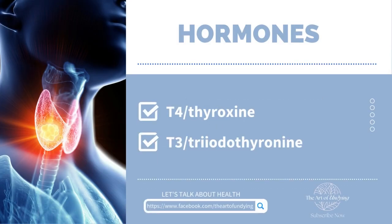T4, which is short for thyroxine, is a hormone that contains 4 iodide atoms. T3, or triiodothyronine, is a hormone that contains 3 iodide atoms.